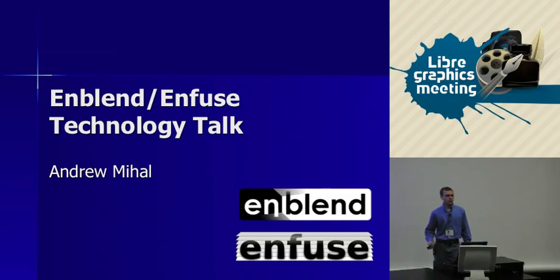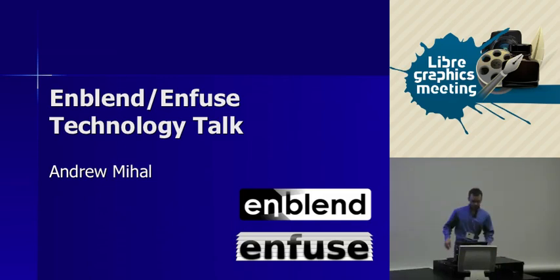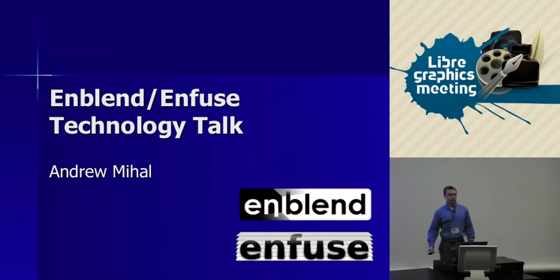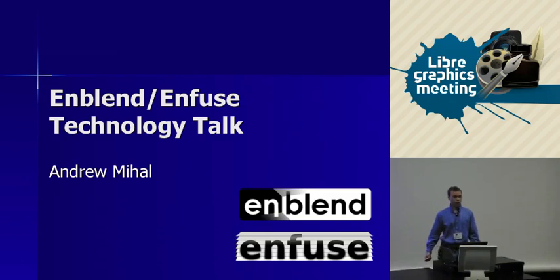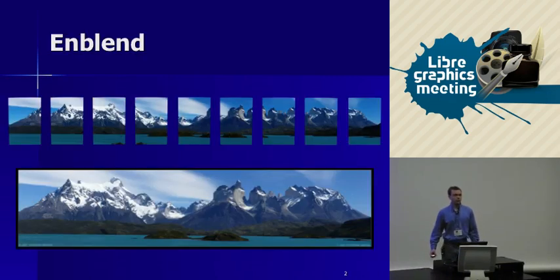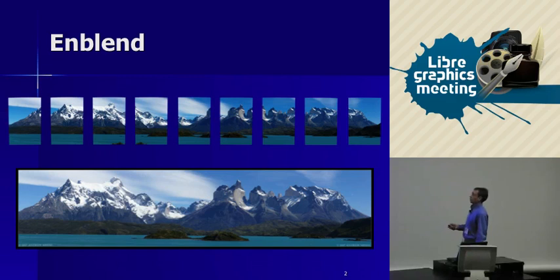I'm Andrew Michal, a grad student at UC Berkeley. I started the nblend project about five years ago. I was interested in making panoramic photography, and there was a tool missing in the workflow. Hugin is already available, which helps you line up your images, does all the image warping, lens corrections, and various things like that, and it outputs all these great images with relative XY offsets.